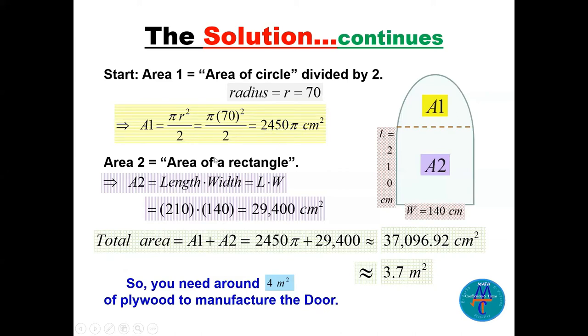Now the area of a rectangle, as we have seen before, is the length times the width: 210 times 140, which is 29,400 cm². Total area will be area 1 plus area 2.